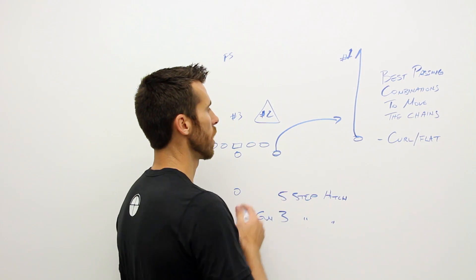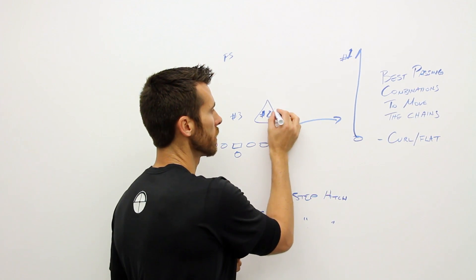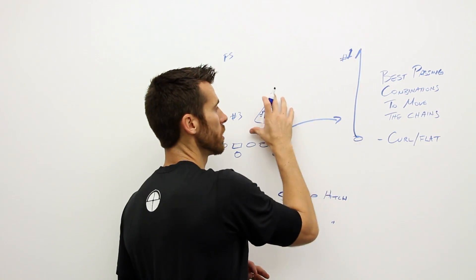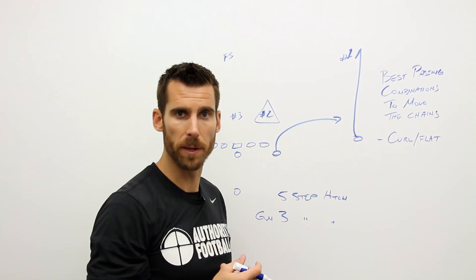So we execute the five-step drop with a hitch, and we want to put a lateral stress on number two. In cover three, where the corner has the deep thirds and the outside linebacker has the flats, it's a great cover three beater.